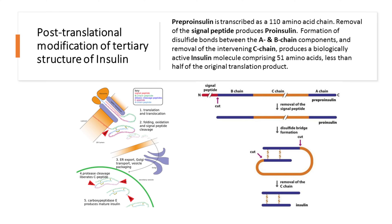This signal sequence dictates where the protein goes — whether it is going to the nucleus, remaining in the cytosol, going into the mitochondria, or being secreted extracellularly. Once the protein is localized at its destination, the signal sequence needs to be removed to make the protein active and perform its function.